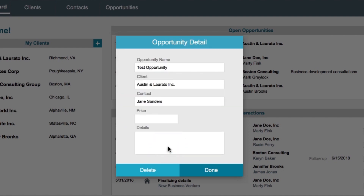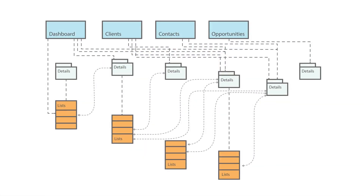In designing the card window interface, you may need to create a workflow diagram like this one. In this case, the four main sections of the app are at the top, indicating the starting layouts. Then you'll see a box representing each list and detail card layout, and how a user can navigate to those in the app.